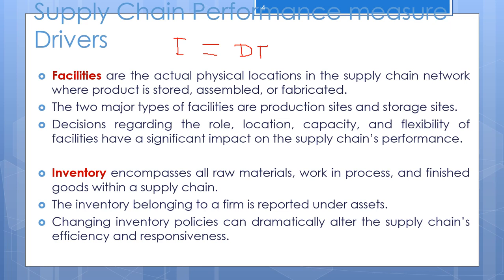Inventory and throughput must have consistent units. The logical conclusion here is that inventory and flow time are synonymous in the supply chain because throughput is often determined by customer demand. Company managers should use actions that lower the amount of inventory needed without increasing cost or reducing responsiveness, because reduced flow time can be a significant advantage in the supply chain.